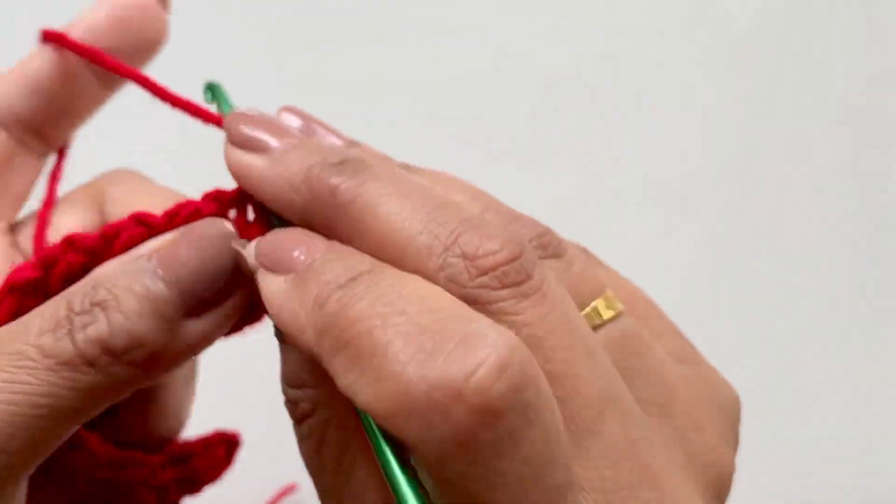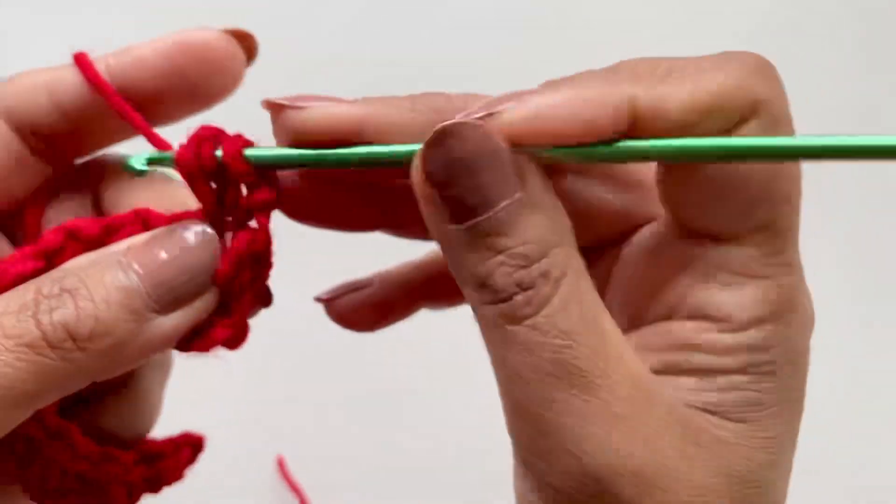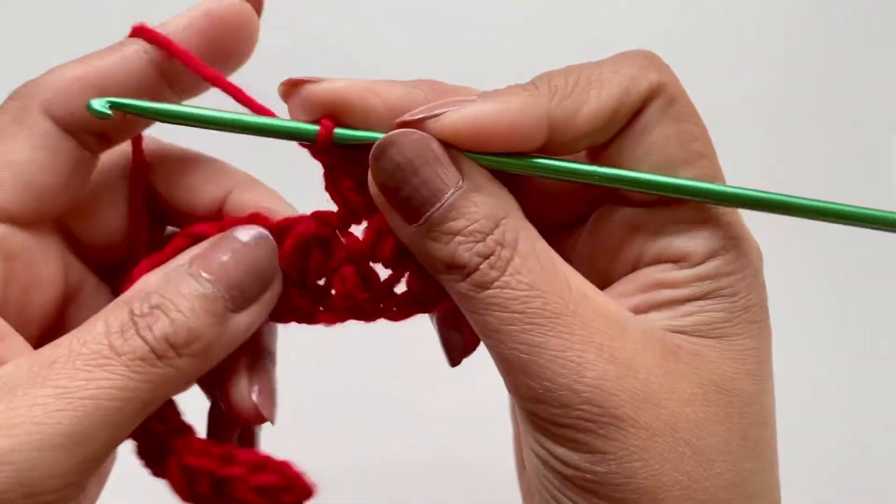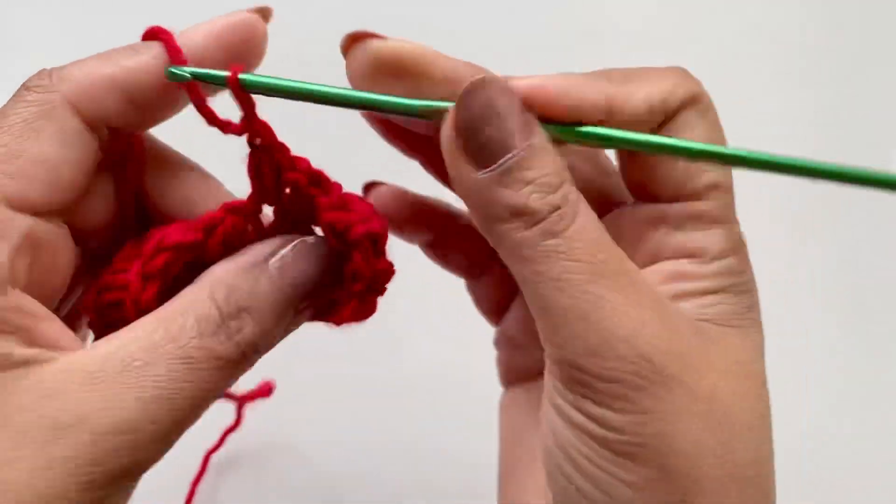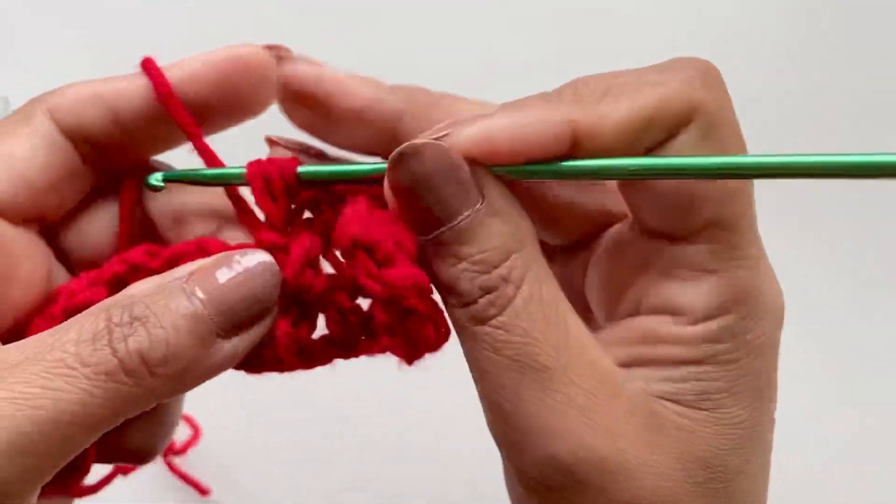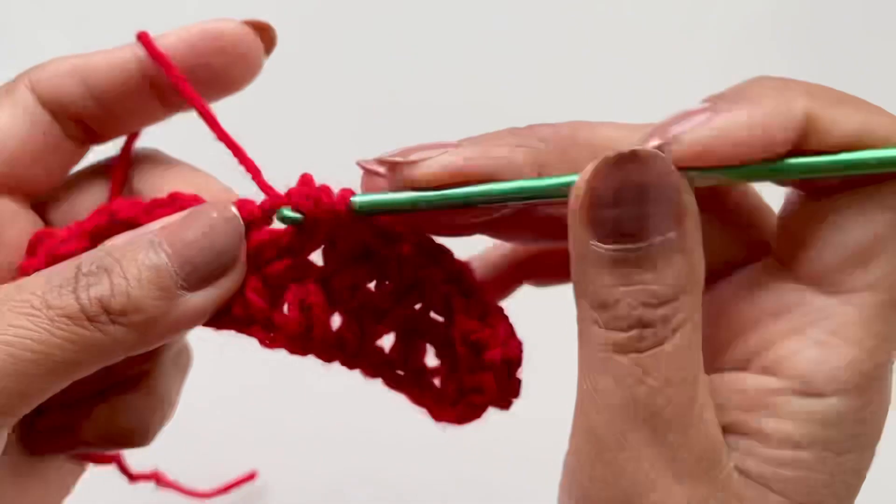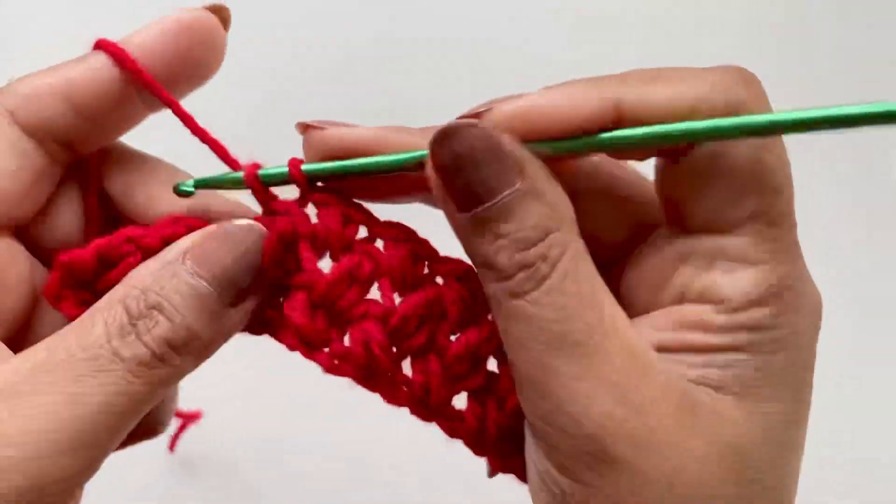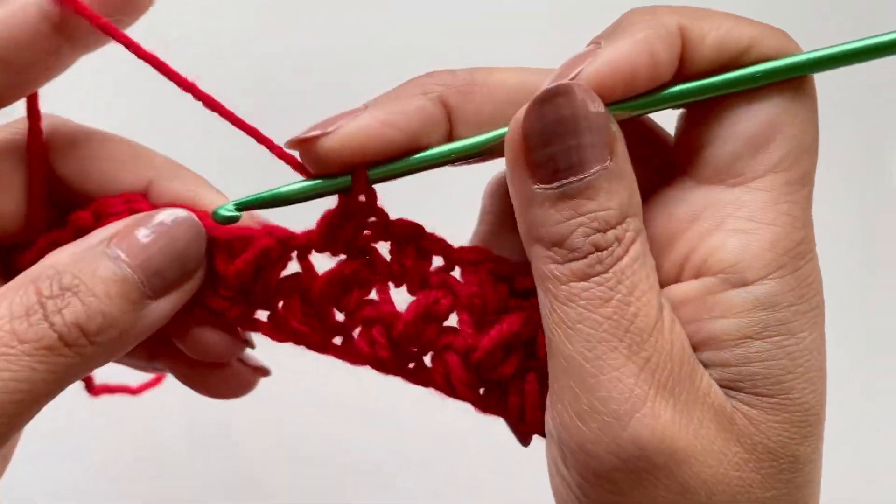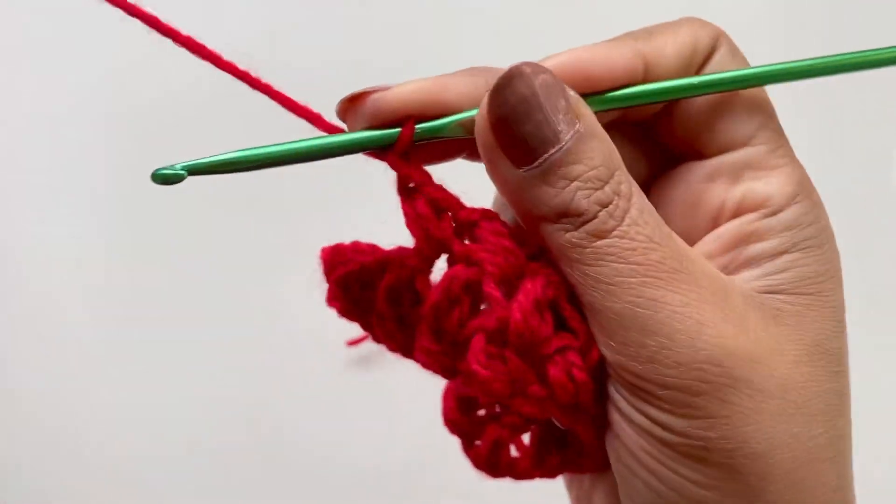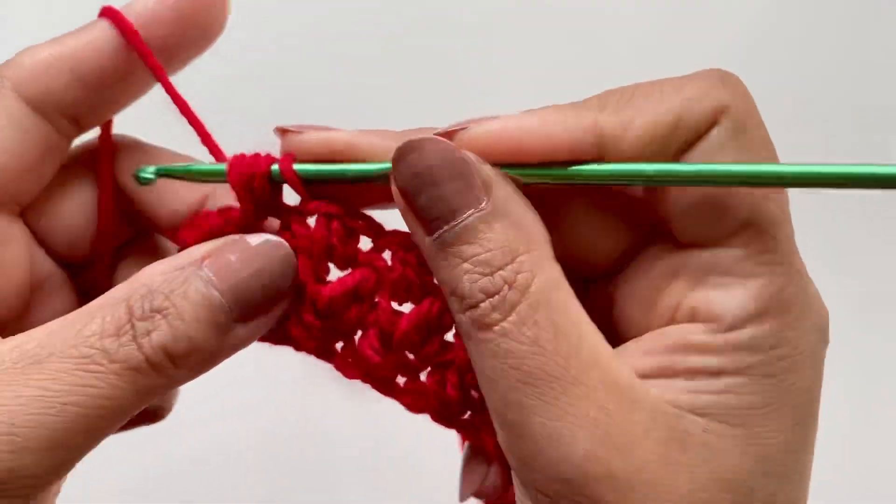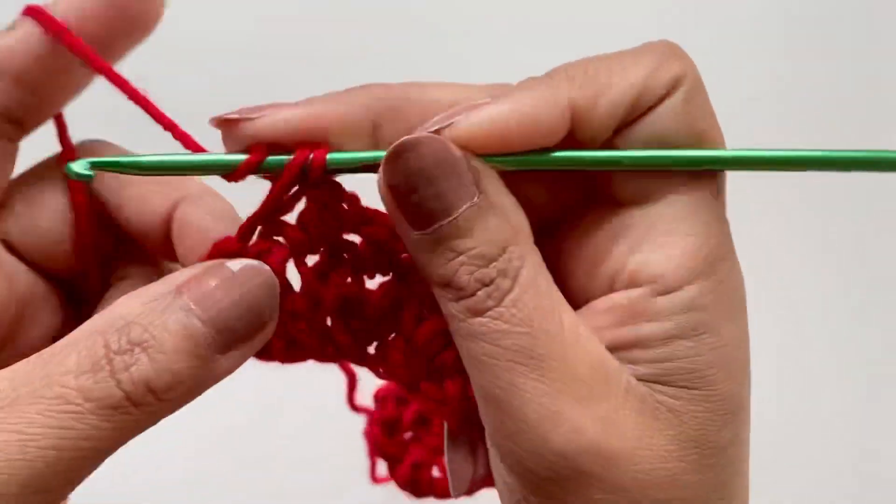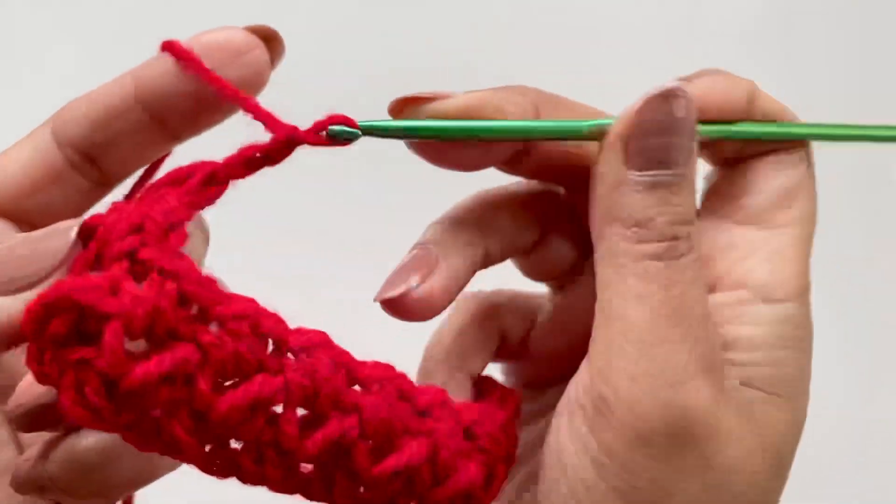There's your triangle. I'm going to go in there, draw per loop, and again, pull through all 4, chain 1. I don't even know if there is a name for this stitch. Maybe if you guys know, let me know. I learnt it from my mum. And the last one is here. Chain 2, flip your work.